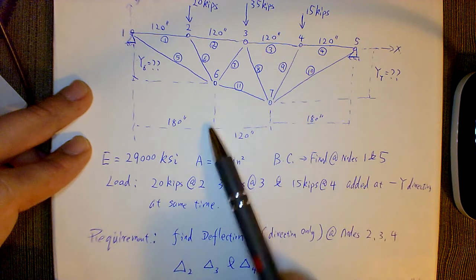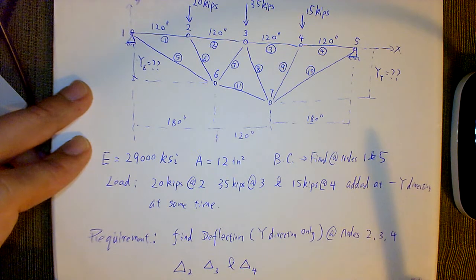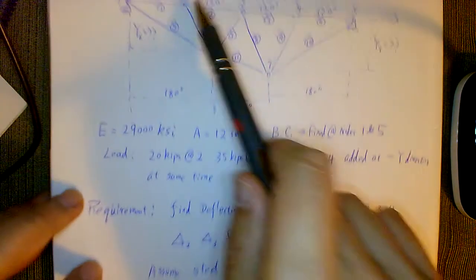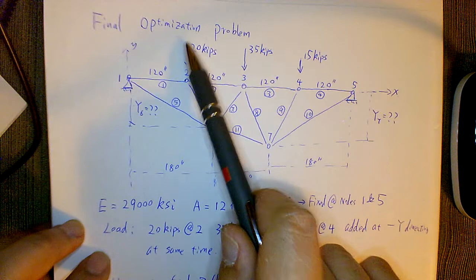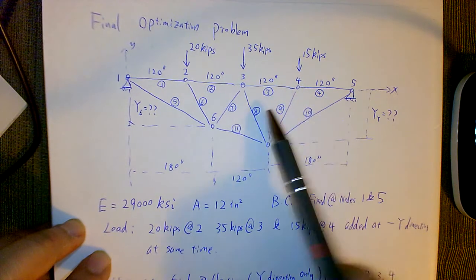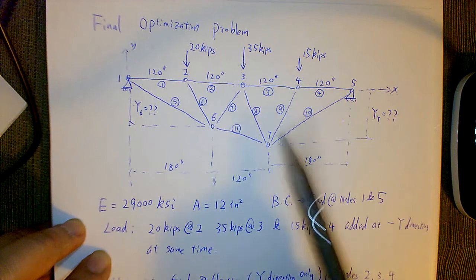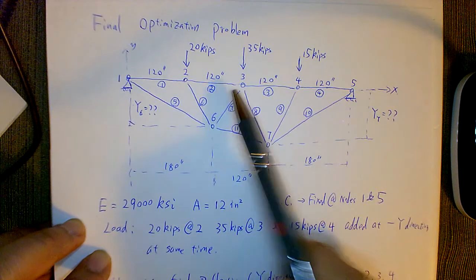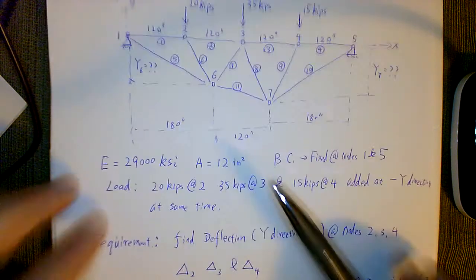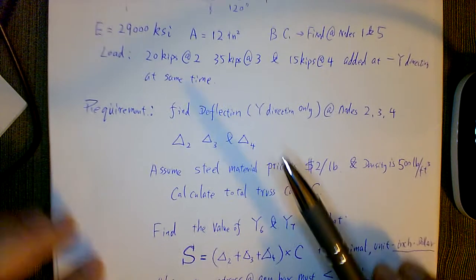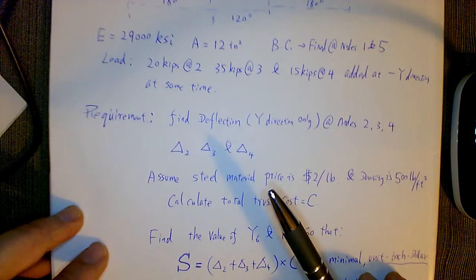All the nodes—the loads are applied at the same time. Yeah, there are no multiple load cases. Just add all those three loads on your truss, then it'll deflect, then we'll try to optimize.